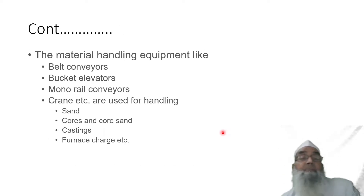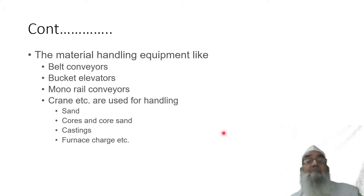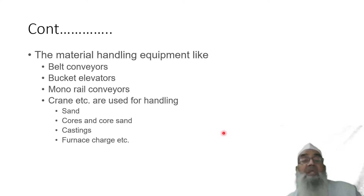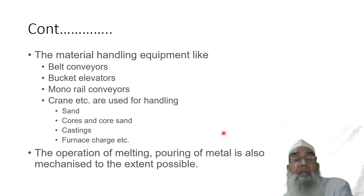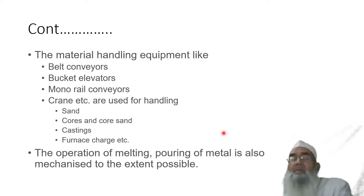Metal handling equipment such as belt conveyors, bucket elevators, monorails, and cranes are used for handling sand, cores and core sands, castings, and furnace charges. The operations of melting and pouring of metal are also to be mechanized to the extent possible.